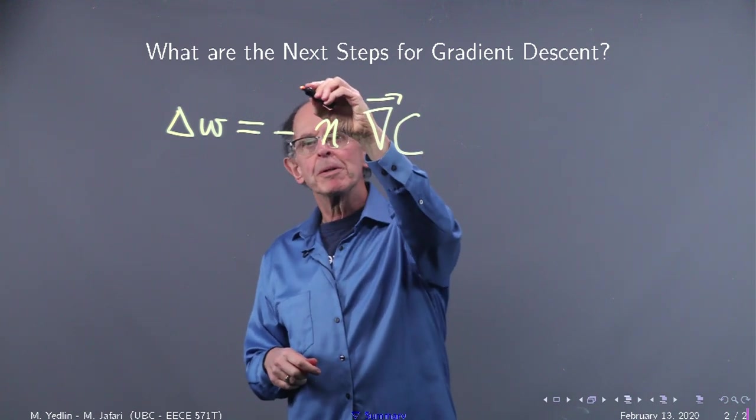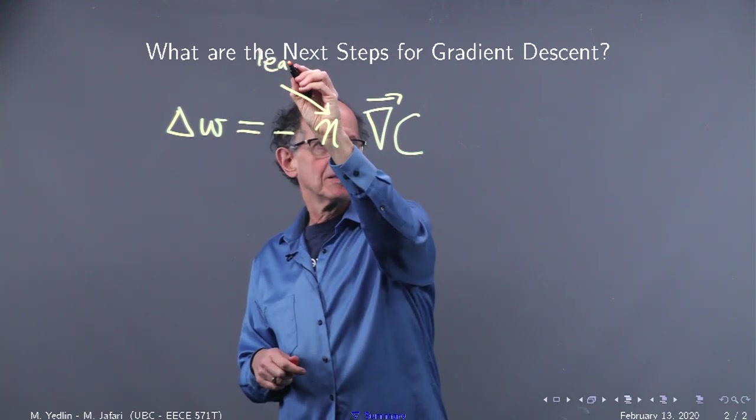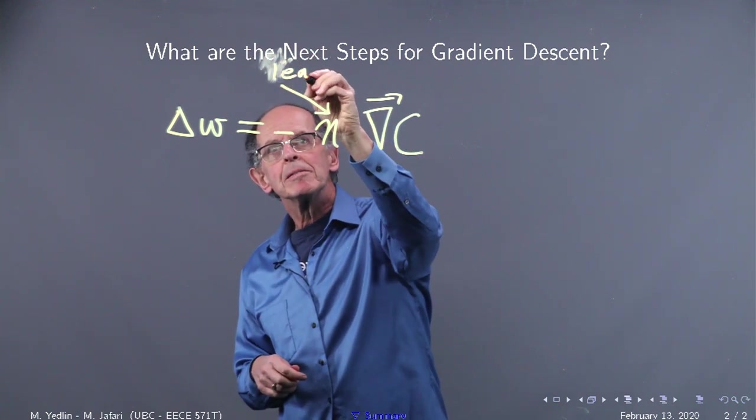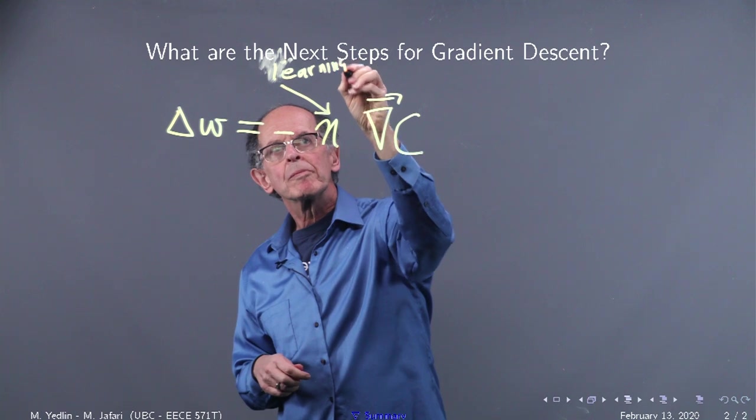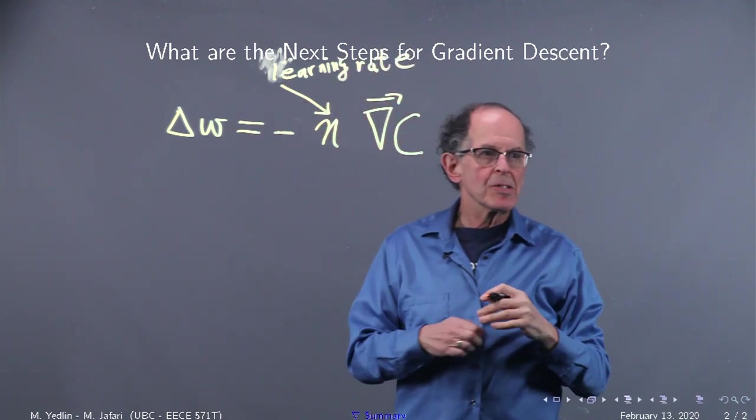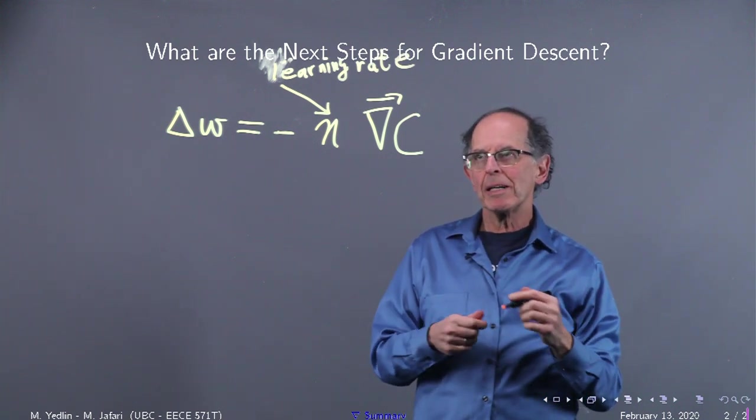This is a number. It's called the learning rate. Down here, learning rate. And it's a hyperparameter. In other words, it's something you're going to tune in your algorithm.